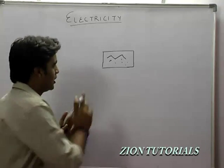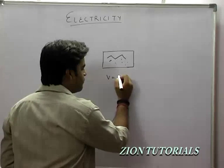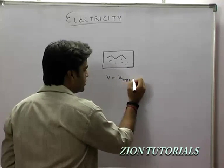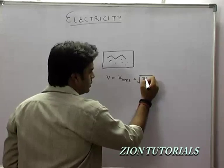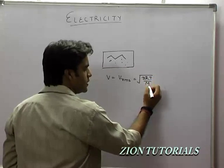If I look at an individual particle, it is moving with velocity v_rms, which equals the square root of 3RT/m. You have studied v_rms.